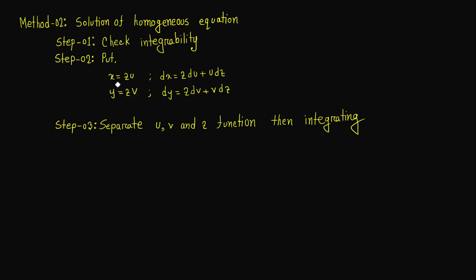What we are doing is x equals z times u, and y equals z times v. Ultimately, the terms are u, v, and z — the function is a function of z. So the equation is expressed in terms of z.